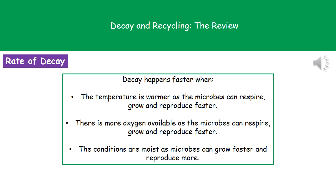We can increase the rate at which decay happens if we have a warmer temperature, because the microbes will be respiring, growing and reproducing faster. If we have more oxygen available, we'll also see faster decay as the microbes can respire, grow and reproduce faster. Finally, if conditions are moist, those same microbes are going to be growing and reproducing more.